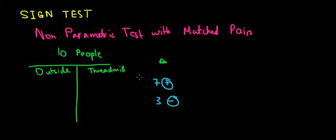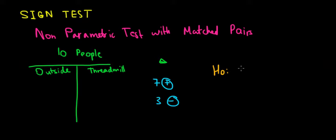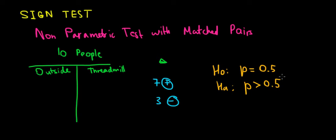What do we do under the sign test? Remember, it is a test on medians. We assume that if we have the same distribution of differences — meaning the same proportion of positive and negative differences — then under the null hypothesis the proportion of positive differences equals 0.5. Under the alternative, let's keep it as a one-sided test: greater than 0.5.